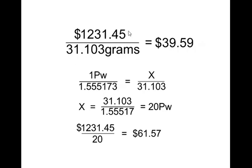Now, the current spot price of gold is roughly $1,231.45. And this is based on 31.103 grams, the troy ounce in grams. Currently, that's giving you the gram price per gram at $39.59.